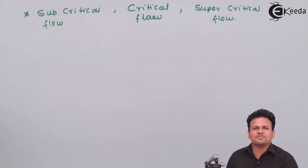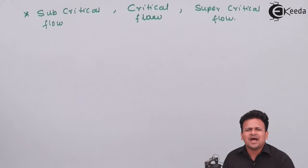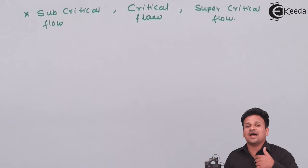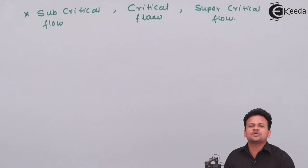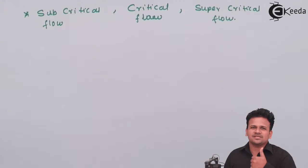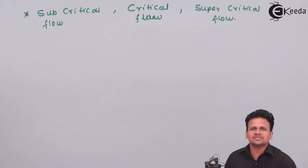To study subcritical flow, critical flow, and supercritical flow, we have to define a dimensionless number. These three flows are similar to a flow type we have already studied, associated with Mach number. Mach number is the ratio of the velocity of the fluid to the velocity of sound. It differentiates between sonic, subsonic, and supersonic velocity. Similarly, we need to define a dimensionless number called the Froude number.